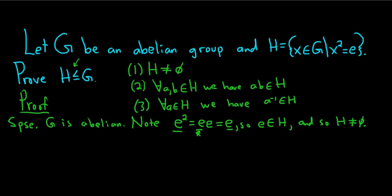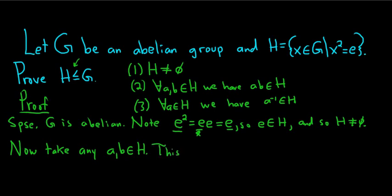Now we have to show that for any two elements in H, the product is also in H. Take any elements a and b in H. We have to show that the product is in H. At this stage of the proof, we explain what it means for these elements to be in H. So this means a squared is equal to e, and it means b squared is equal to e.